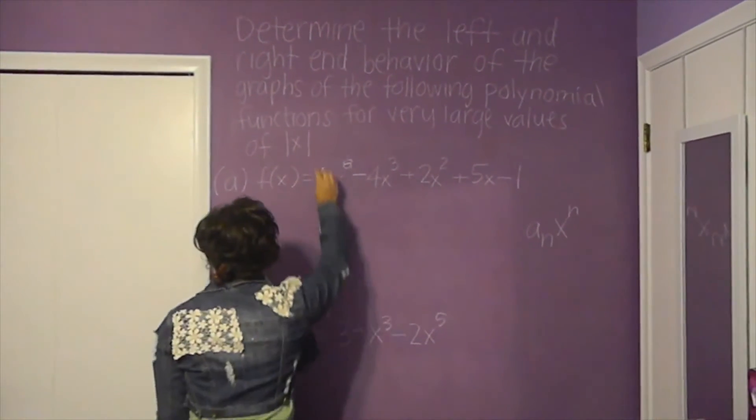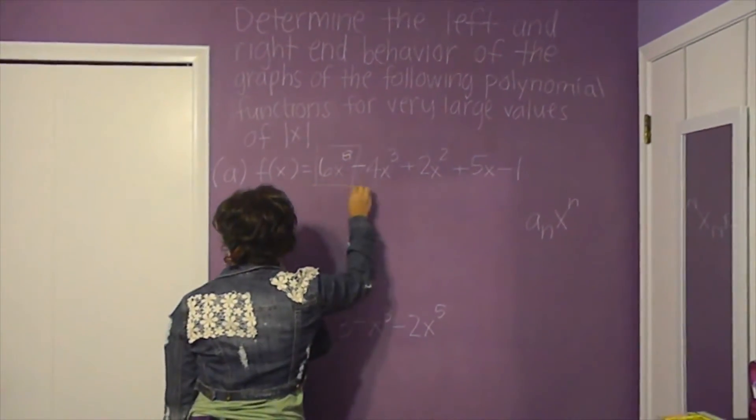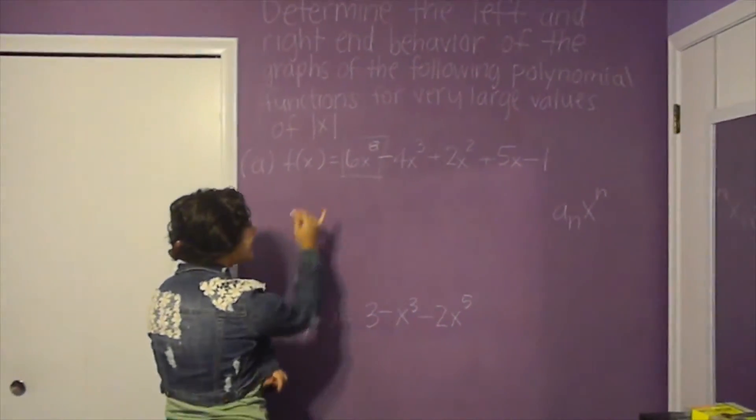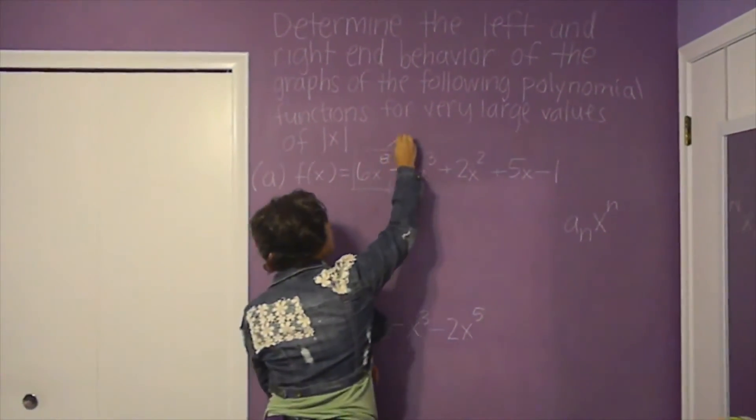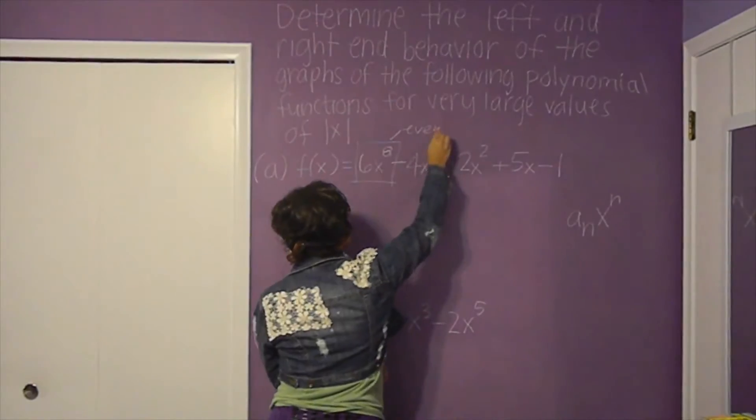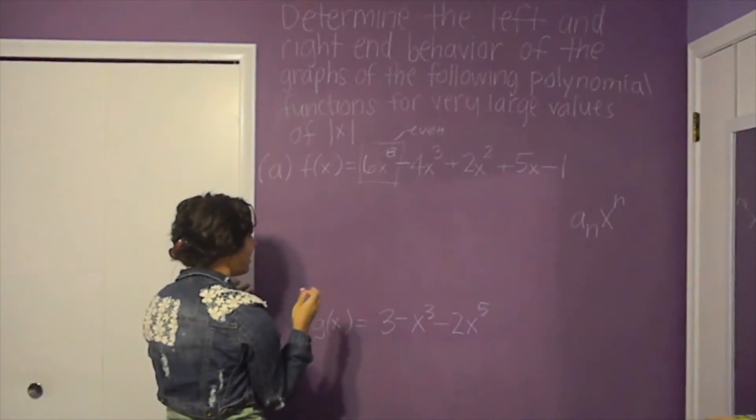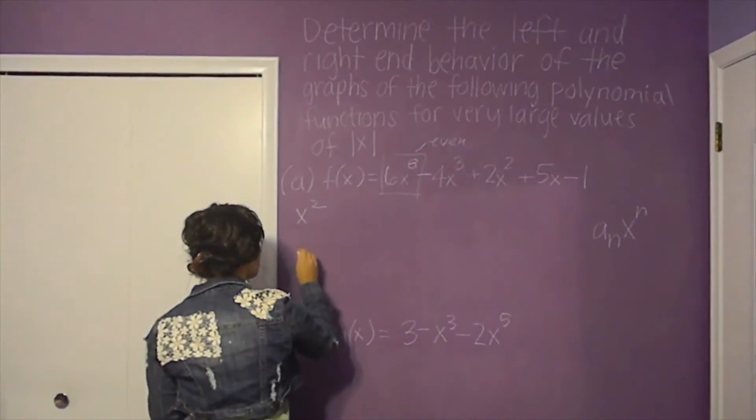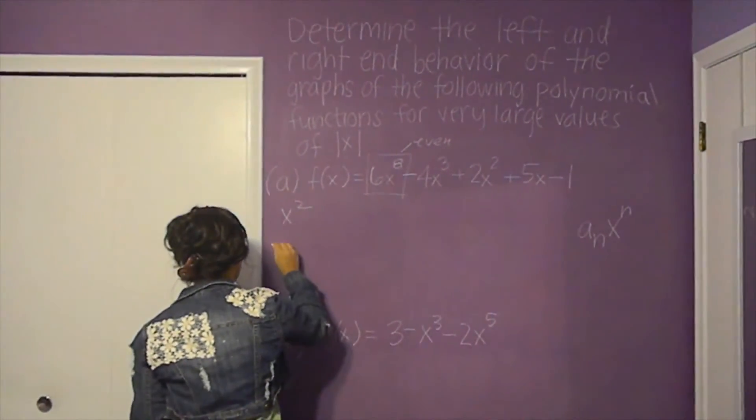What you're really going to look at is this first term here: the coefficient 6 with x^8. Since x^8 is even, it acts like an x² function, so it will end up looking like a parabola.